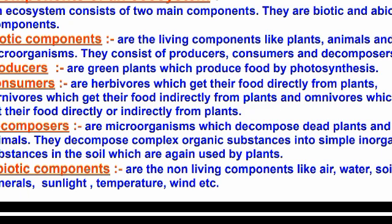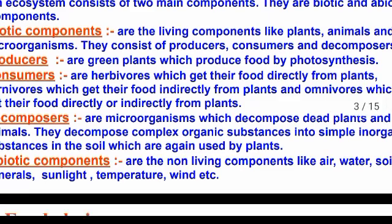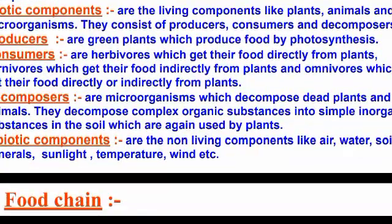The components of an ecosystem are two things: biotic and abiotic. Bio means life, so biotic means living things. Abiotic means non-living components. Biotic components include plants, animals, and microorganisms, and consist of producers, consumers, and decomposers.